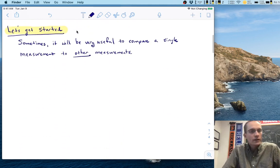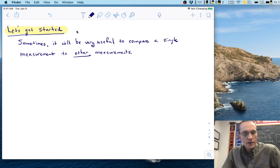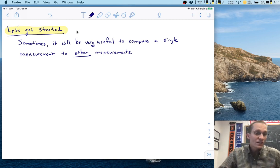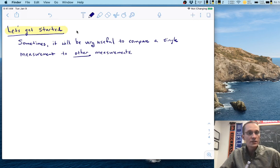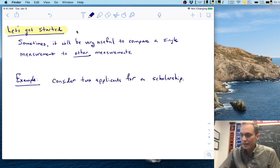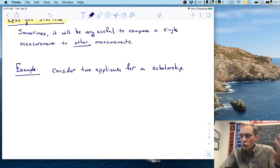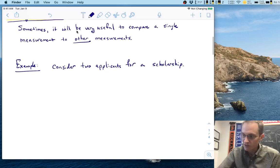Now, sometimes in our work, it's going to be very useful to be able to compare a single measurement that we might take to other measurements, maybe measurements that we've also taken for other participants or other groups of participants, or as we'll see in the example today, other measurements that were used to define what is expected on a given test or a given scale. So for example, just to start us off today,